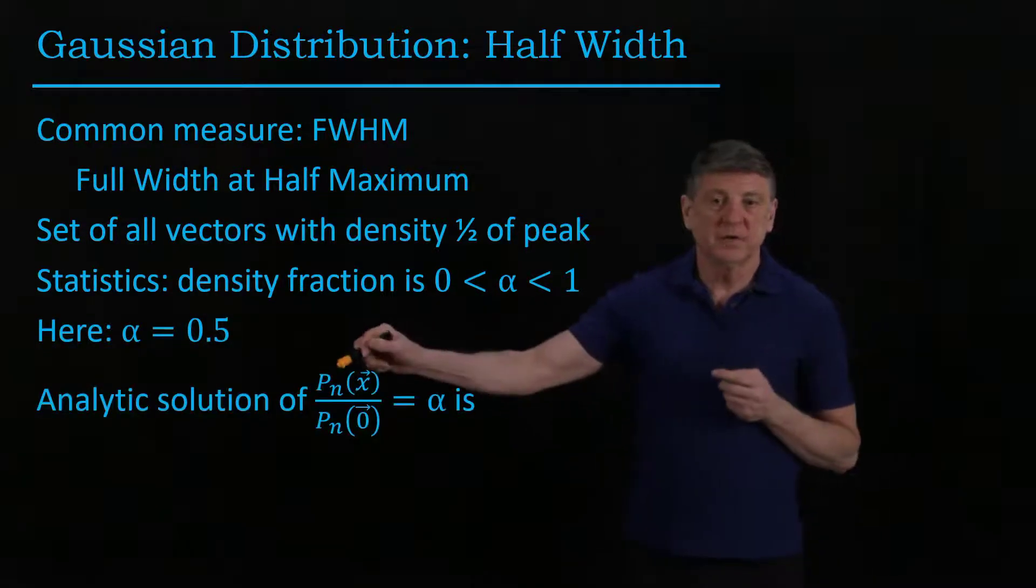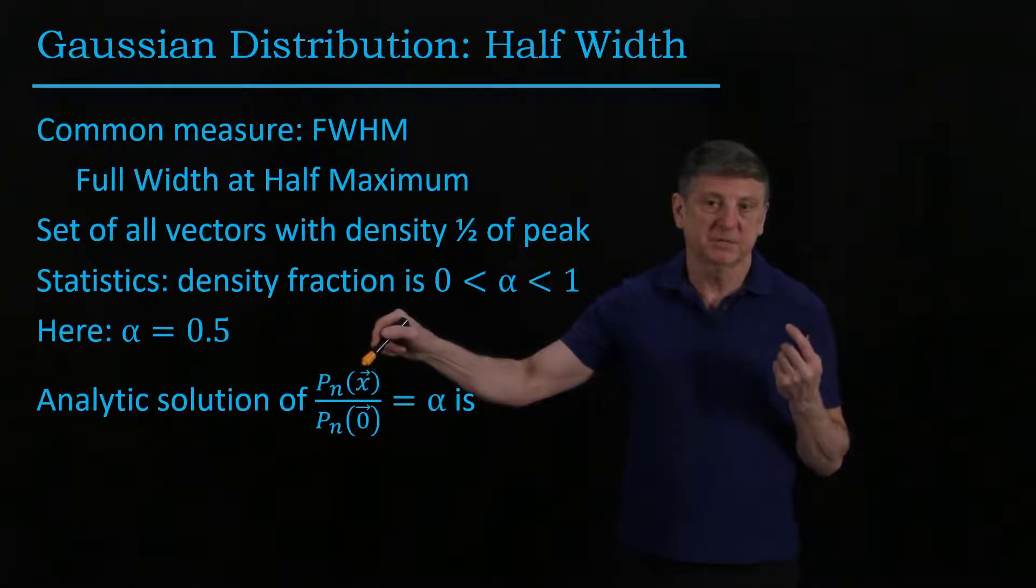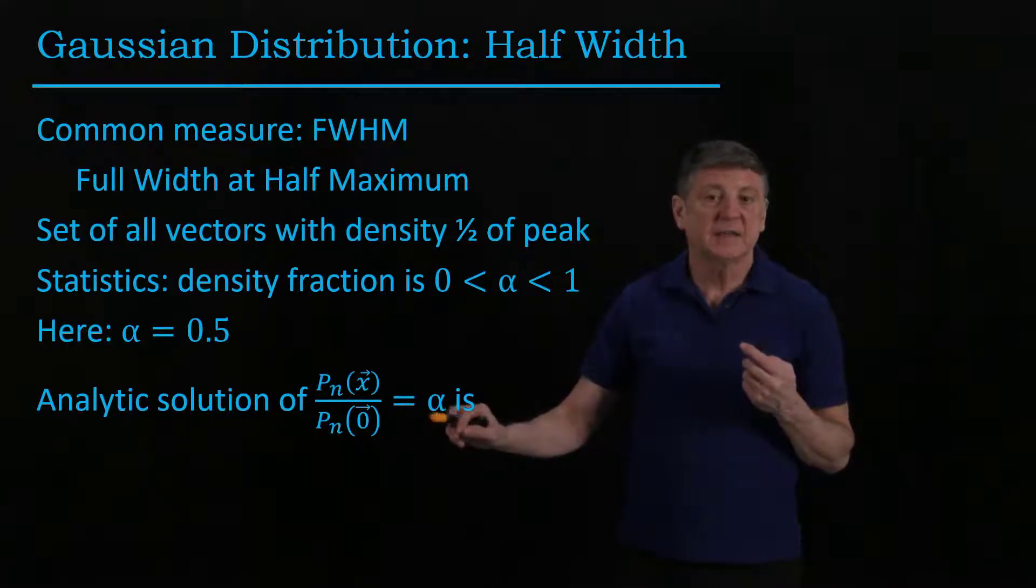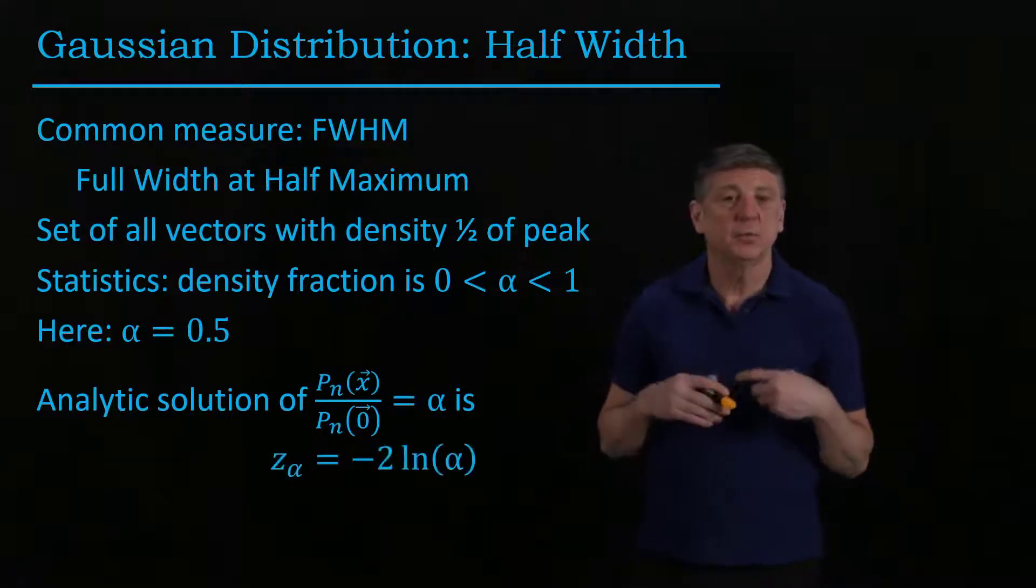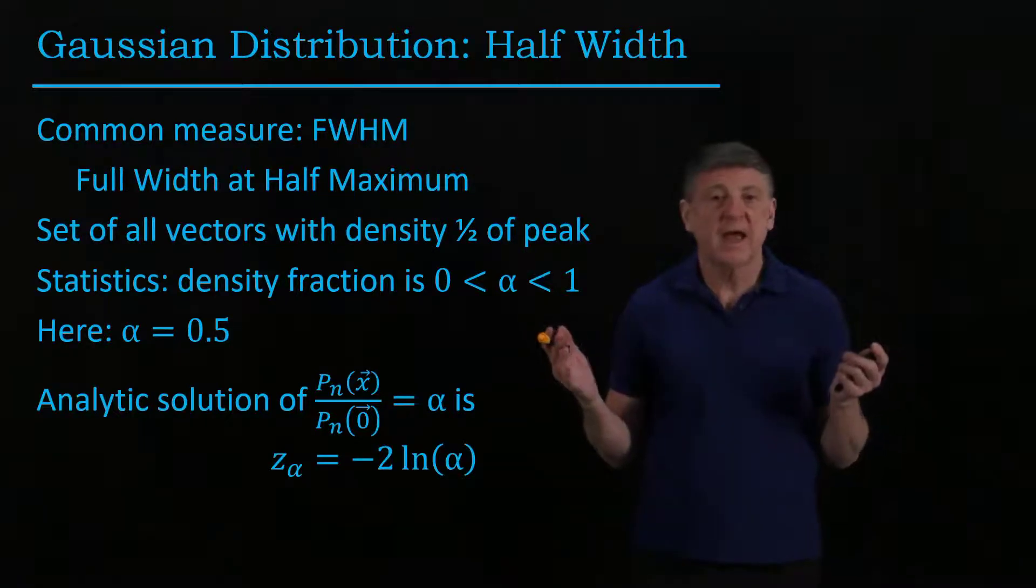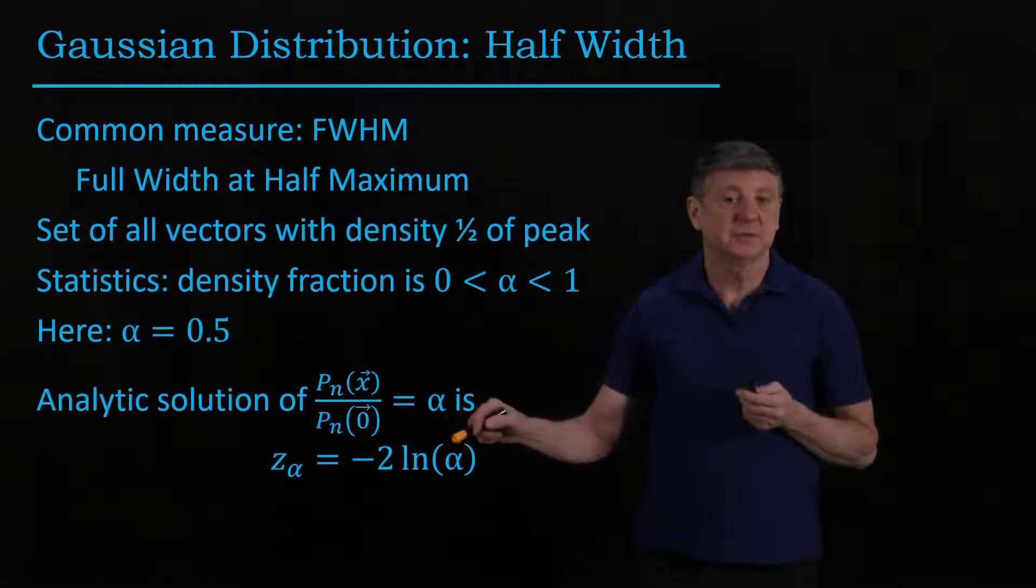And when we do that, what we want to do is we want to say what's the probability of a variate appearing, a multi-dimensional variate appearing, divided by the probability of the zero vector, and set that to alpha. And we can work through the exponential on the previous slides, and we'll find that our z alpha is minus two times the log of alpha.